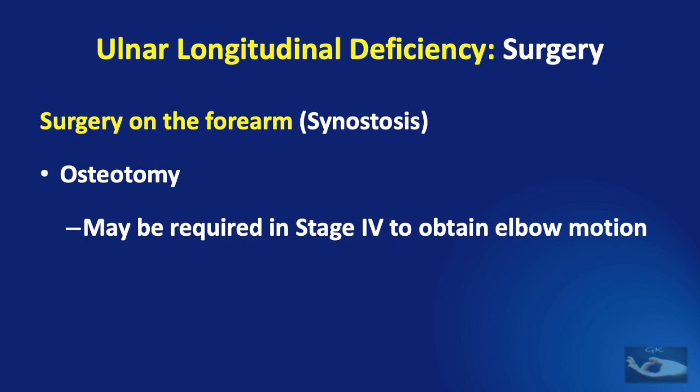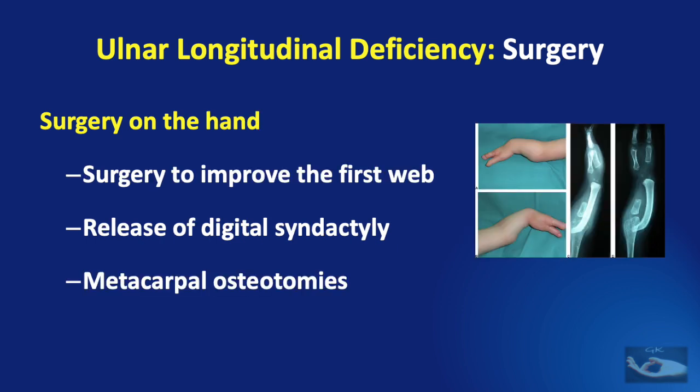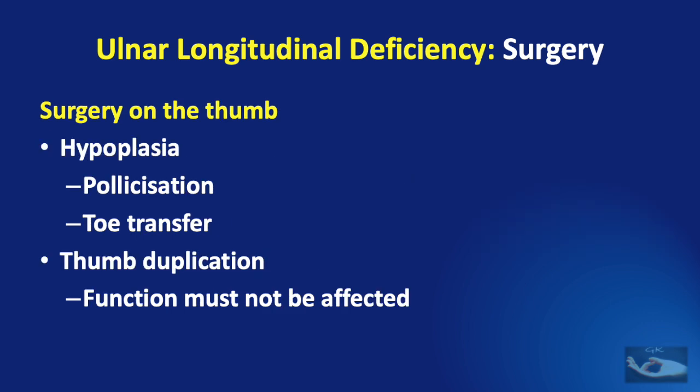Sometimes an osteotomy of the synostosis followed by interposition of soft tissue may be required in stage 4 to obtain elbow motion. Surgery on the hand may involve surgery to improve the first web, to release digital syndactyly or to perform metacarpal osteotomies to provide pulp-to-pulp opposition of the existing fingers and thumb. In some cases the thumb may be hypoplastic; if it is hypoplastic, pollicization or toe transfer may need to be done, but this needs to be considered only when the other fingers are present and the decision must be made after discussing with the parents.